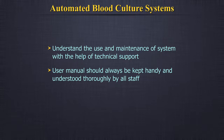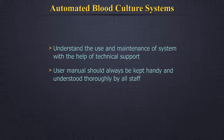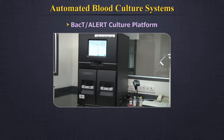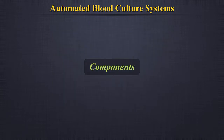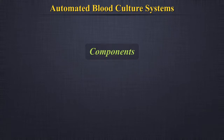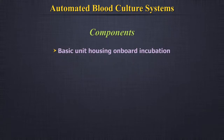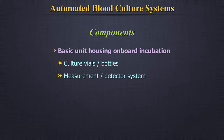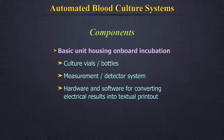We will use BacT/Alert for blood cultures in this demonstration. BacT/Alert Culture Platform Components. The key components of an automated blood culture system are: basic unit housing, on-board incubation of culture vials, bottles, measurement, detector system, and hardware and software for converting electrical results into textual printout.